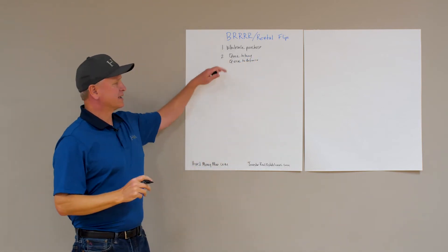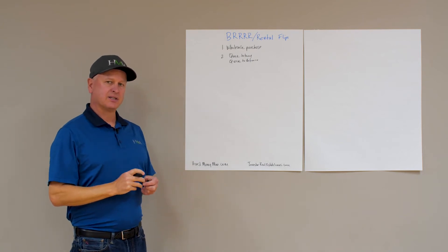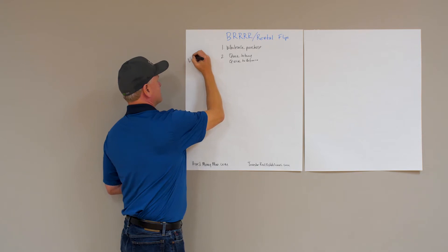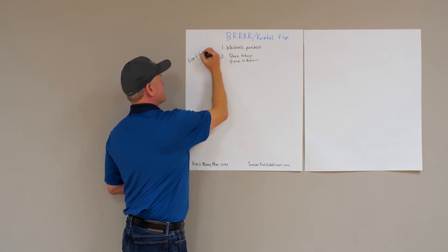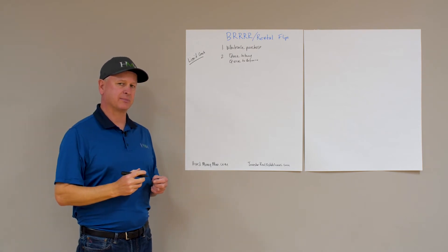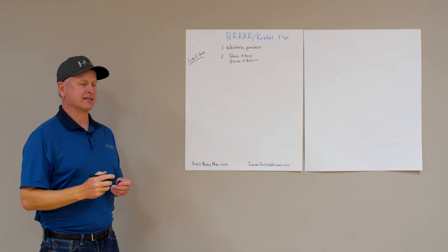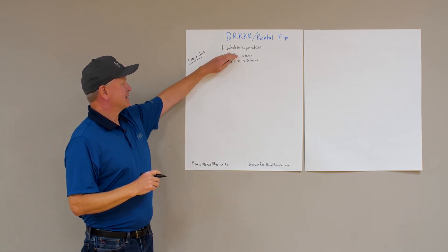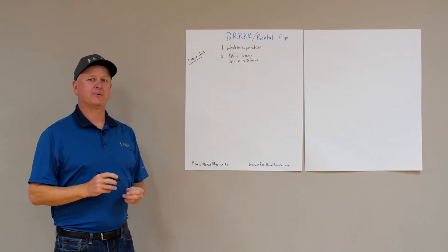If you're using the BRRRR method to limit your cash, if your goal is to maximize the loan and limit the cash out of your pocket for these rental properties, one of the tenets of this is buying at wholesale. But why do we buy at wholesale?